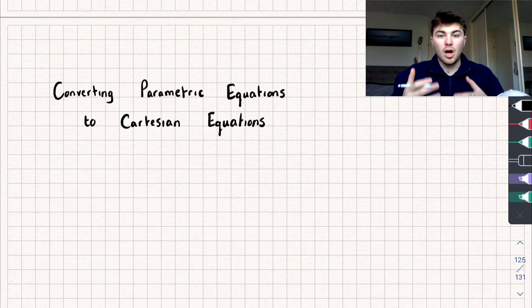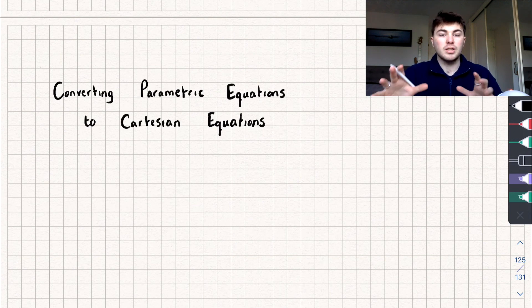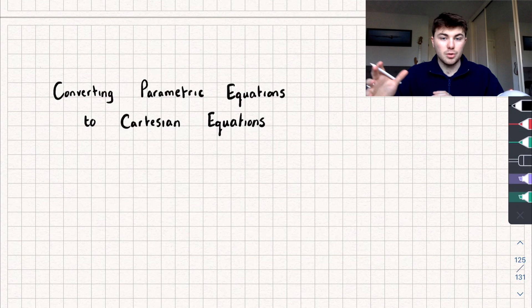Hello, in this video I'm going to show you how we can convert a pair of parametric equations and write them in a Cartesian equation form. To do this I'm going to work through three different questions that will hopefully demonstrate the three different types of questions you can come across in an exam and I'll timestamp each one below so you can just skip through to whichever question you want to see.